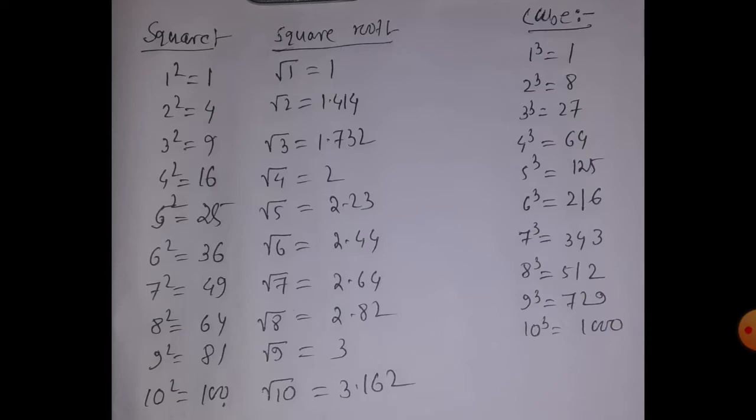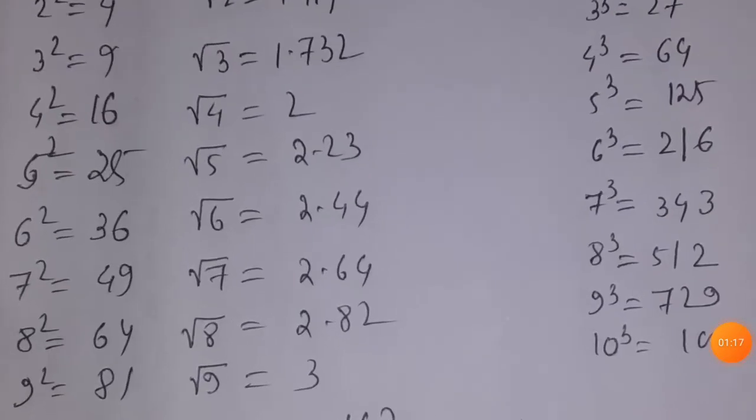Square root of 6 is 2.44, square root of 7 is 2.64, square root of 8 is 2.82, square root of 9 is 3, and square root of 10 is 3.162.